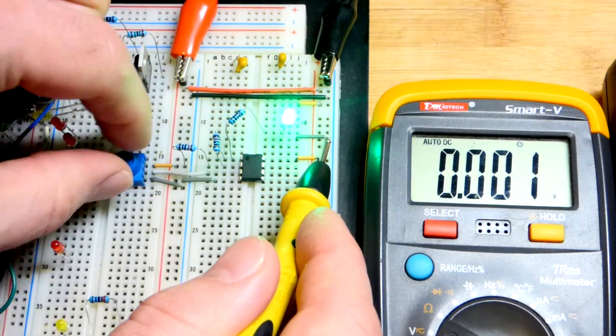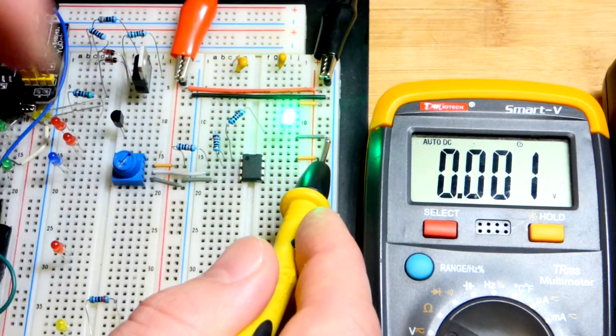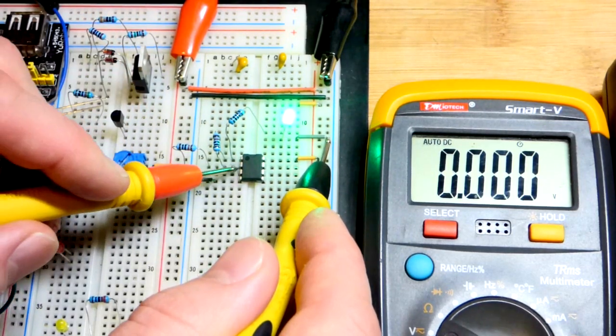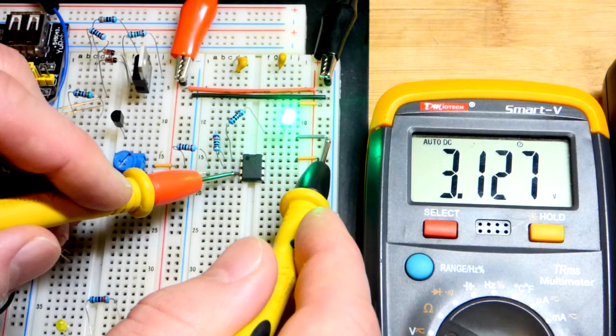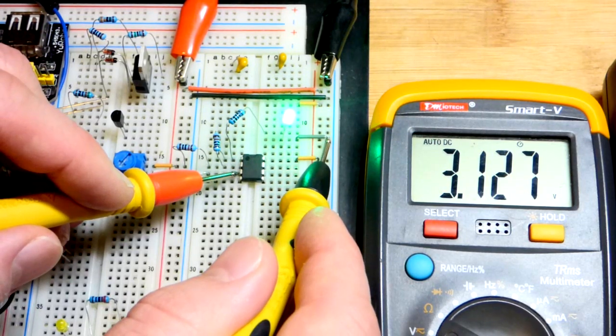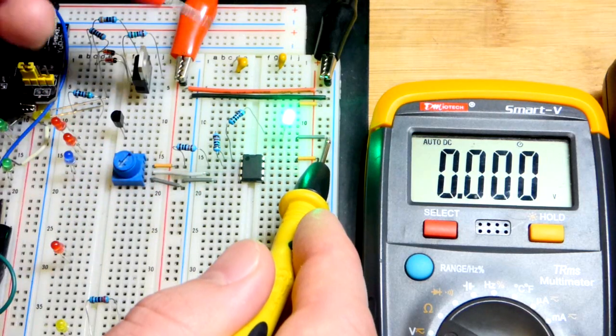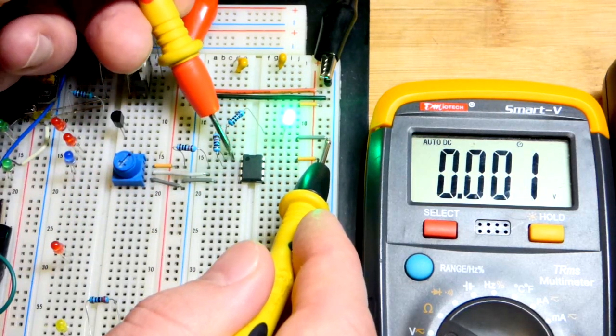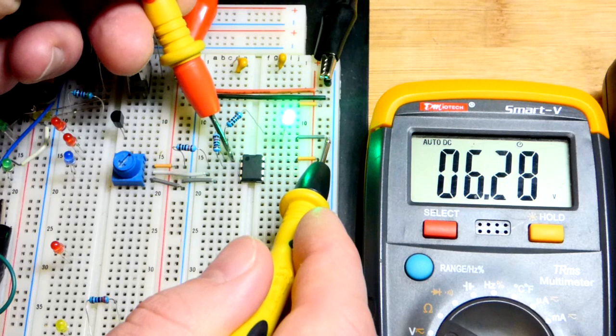And so we'll go down a little bit. It doesn't output all the way to the positive supply. And so 3.1, so we expect about 6.2 approximately, a little bit more than that at the output. Right there, 6.28.